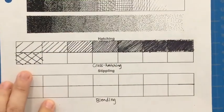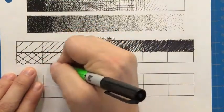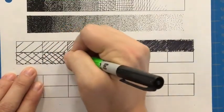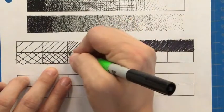For my first value I start with very few lines with big spaces in between. Then I increase my number of lines and start to decrease the space.